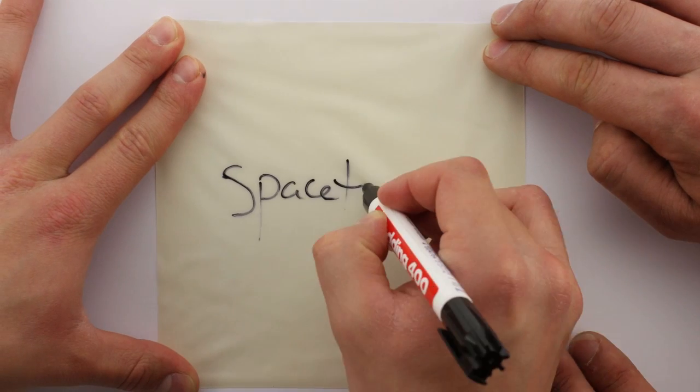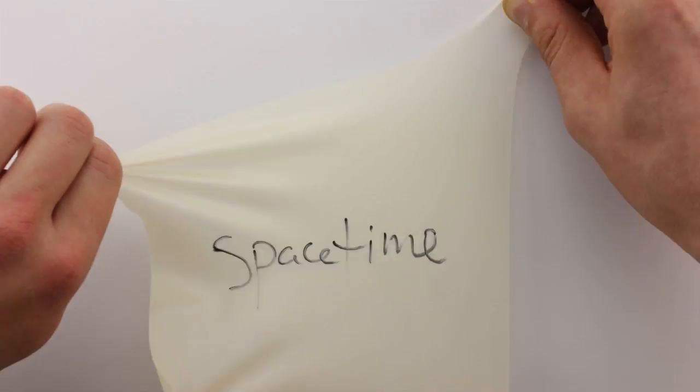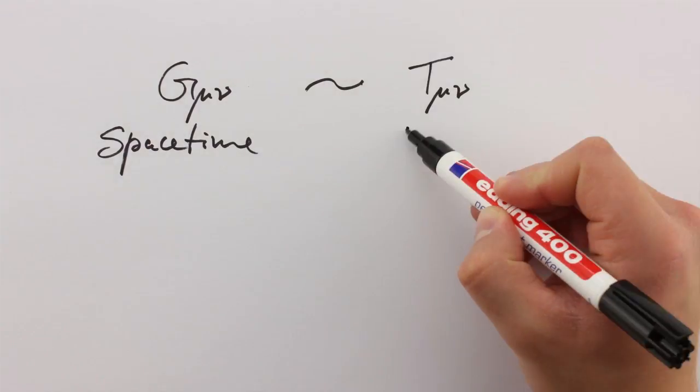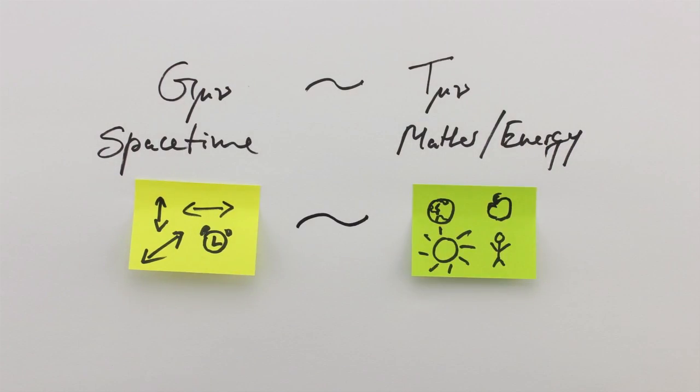One consequence of Einstein's theory is that space-time can be stretched, a bit like a rubber sheet. He found out that mass, or energy, tells the four-dimensional space-time how to deform, and vice versa, that deformation tells matter how to move.